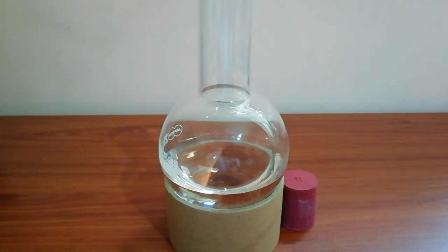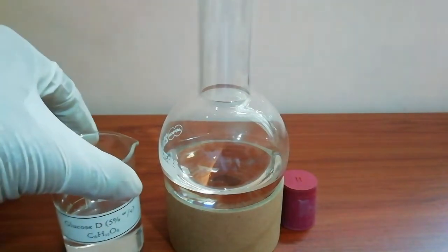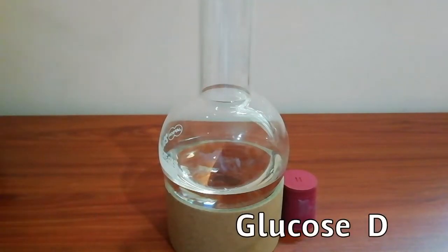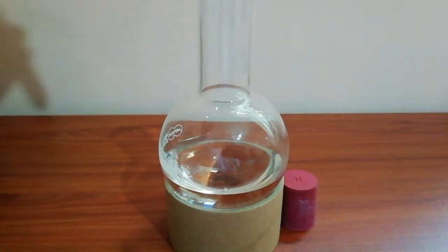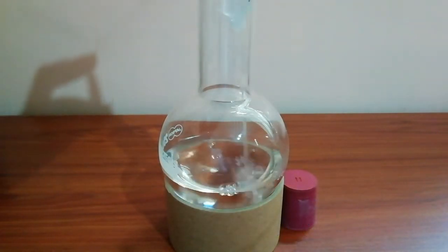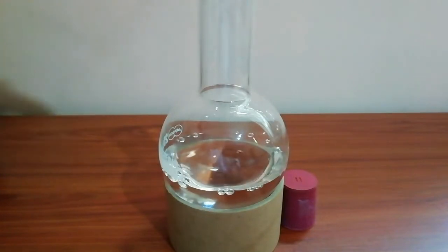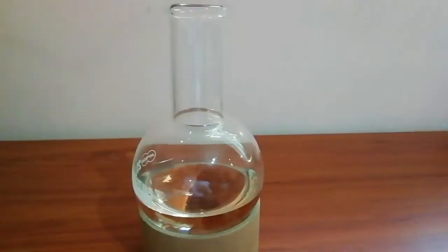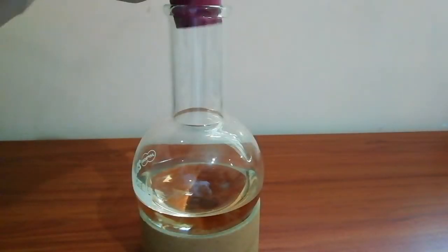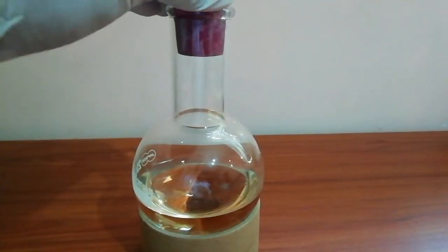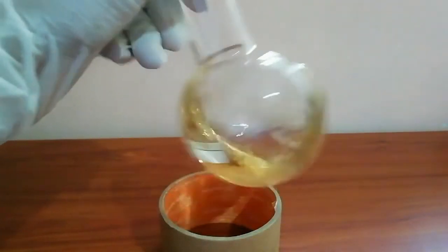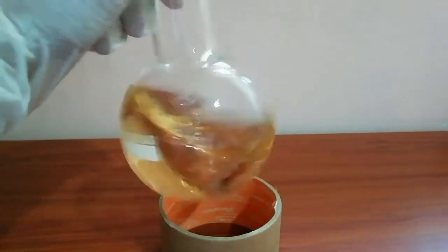For the final step, we need to add 10 milliliters of 5% glucose solution. Now we need to shake this flask well until the silver mirror forms.